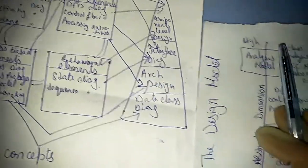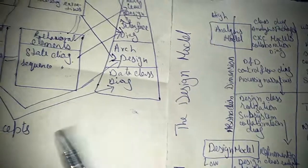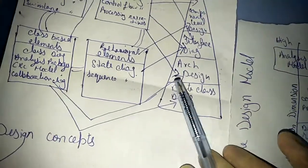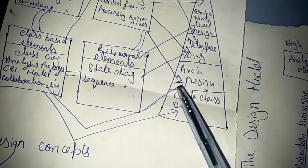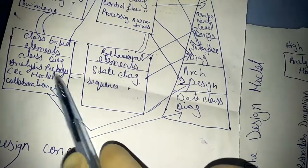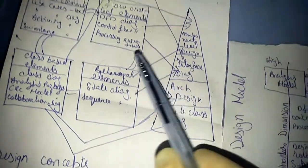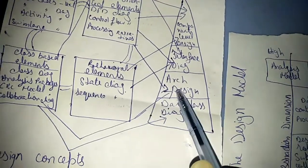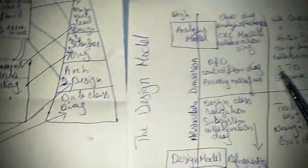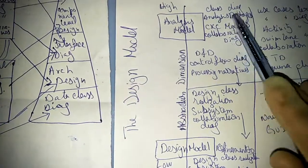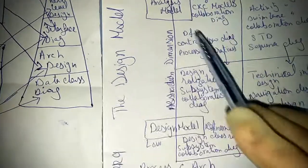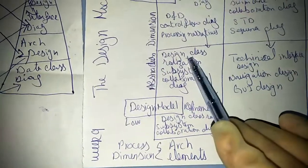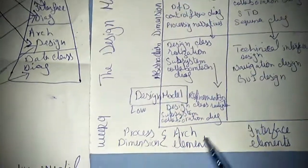Here is the diagram of these two relations. You can see the architecture design and which analysis model is appearing in the architecture design and flow-oriented elements. Class-based elements, CRC models, collaboration diagram, class diagram, and DFD — these are the architecture elements.